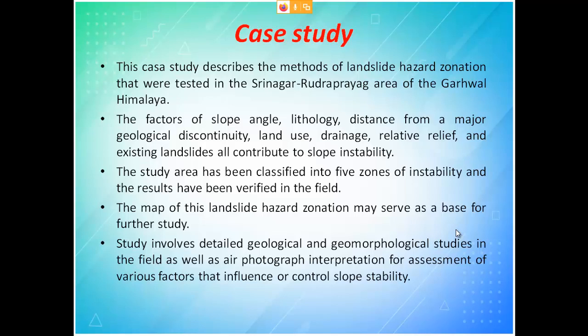Slope angle is the inclination from zero degrees. Distance from major geological discontinuity means that if there is a gap between two hills through a narrow shallow path, that region has more landslide risk. Land use matters too — if the land is kept as thick forest, landslide risk is minimum. If used for agriculture, there is some chance. If the land is left unused, there is a great chance for landslide.